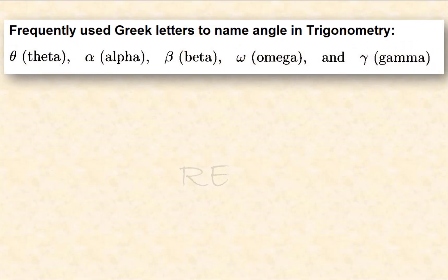These are the frequently used Greek letters to name angles in trigonometry: theta, alpha, beta, omega, and gamma.